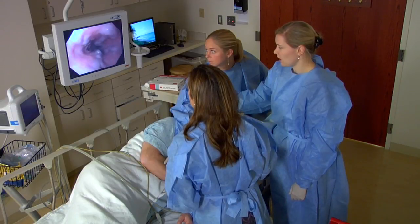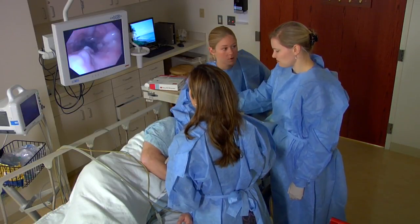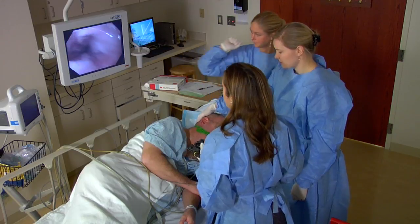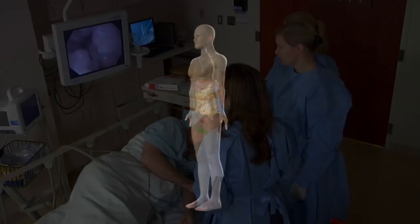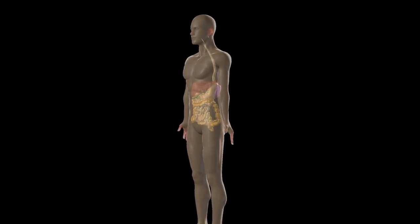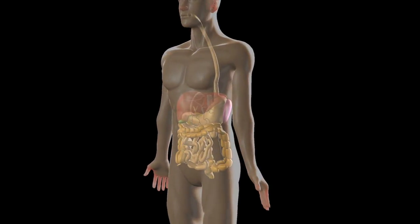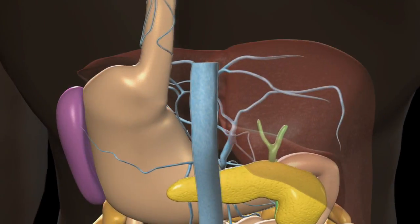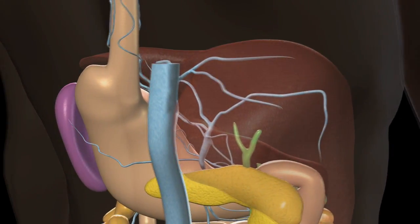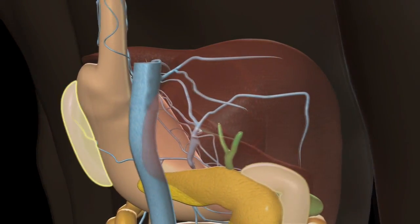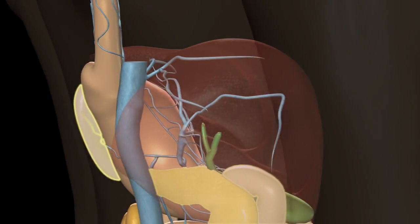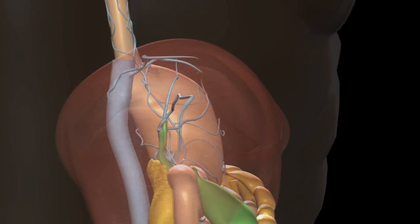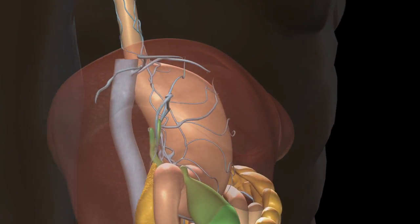Esophageal varices are abnormally dilated veins in the esophagus. Under normal circumstances, blood from the intestine, spleen, and pancreas enters the liver through a large blood vessel called the portal vein.